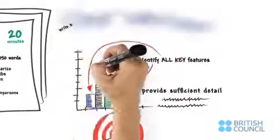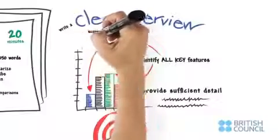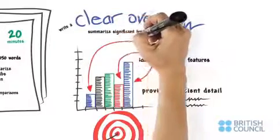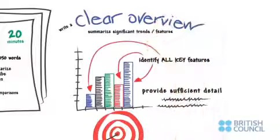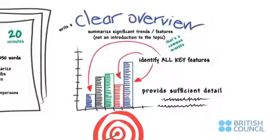It's important to write a clear overview. This means summarizing the most significant trends or features from the data or information in the diagram. This is not simply an introduction to the topic. That's a common mistake.